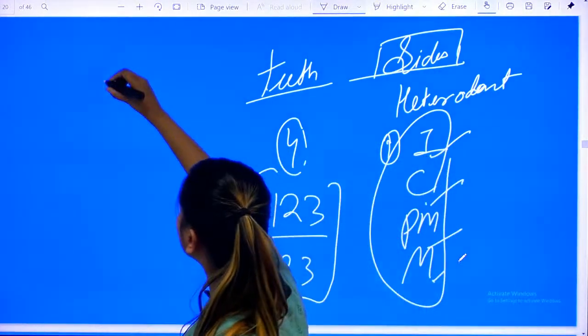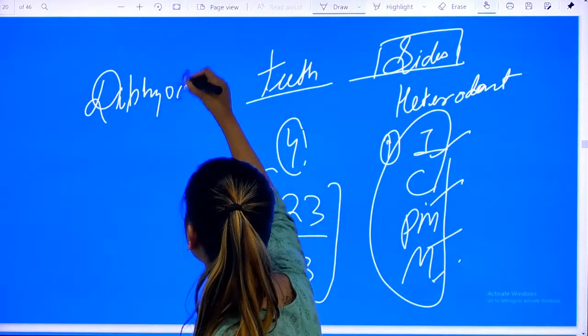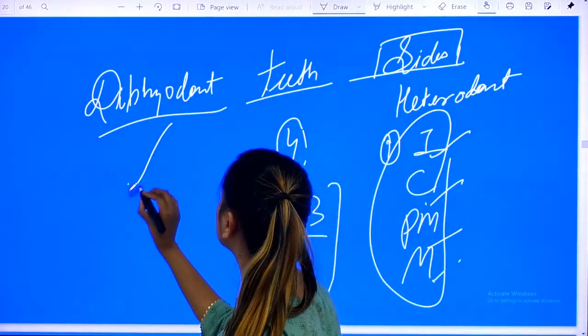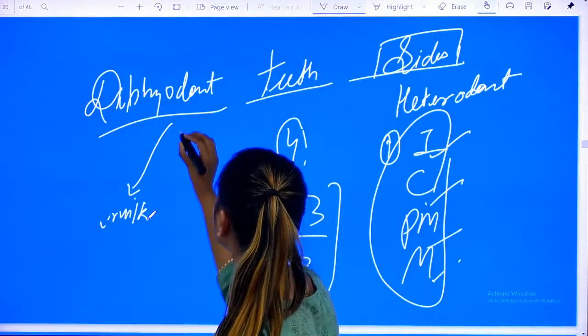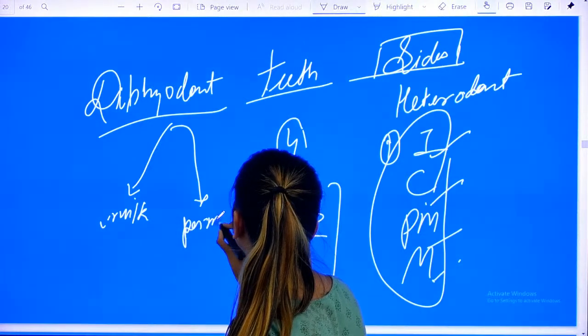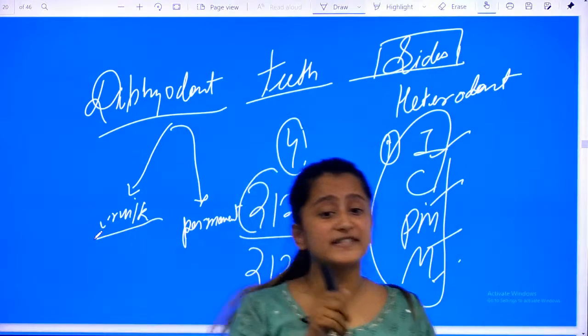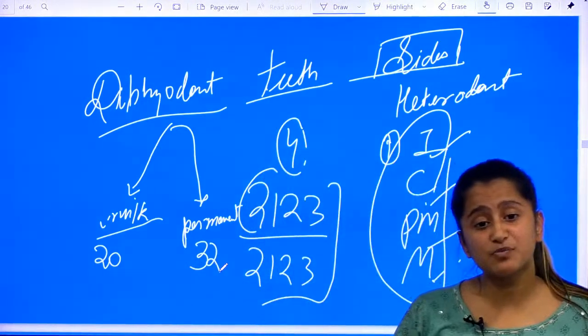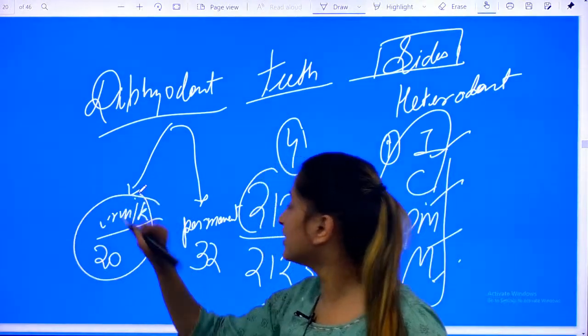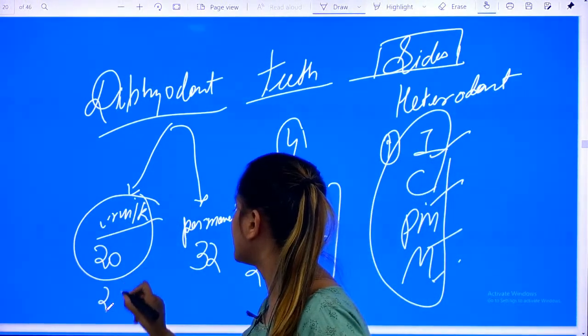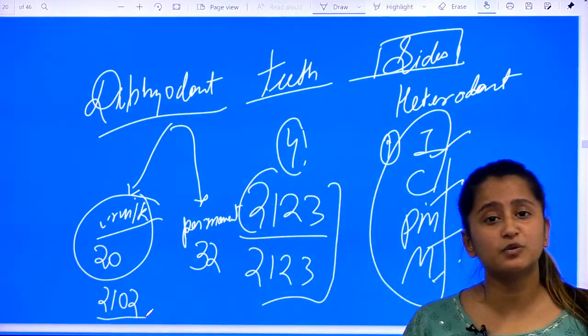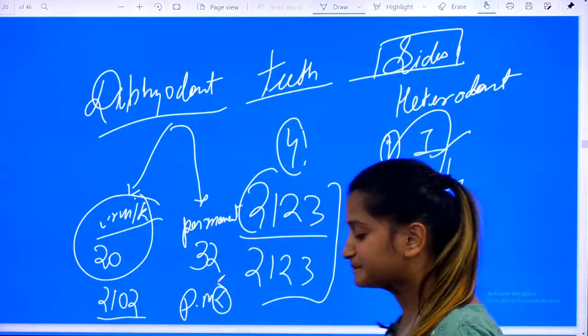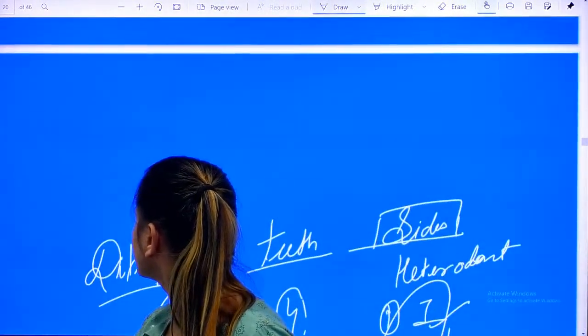If I want to talk about the arrangement, it's diphyodont. Diphyodont means two sets of teeth: milk teeth and permanent teeth. Milk teeth is the first set which is 20 in number and the permanent one is 32 in number. The difference is the size and that premolars are absent in milk teeth. Its dental formula is 2 1 0 2.